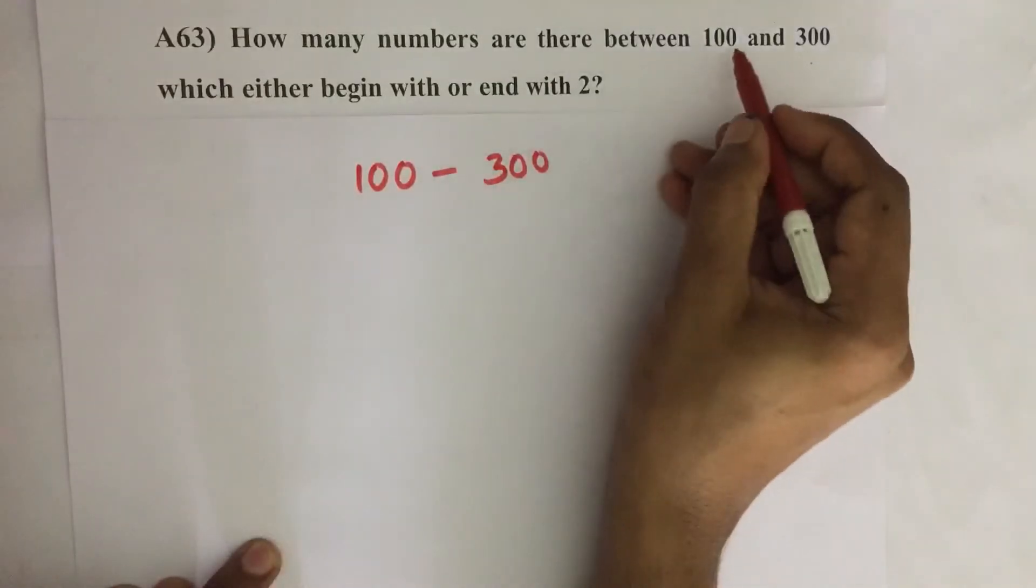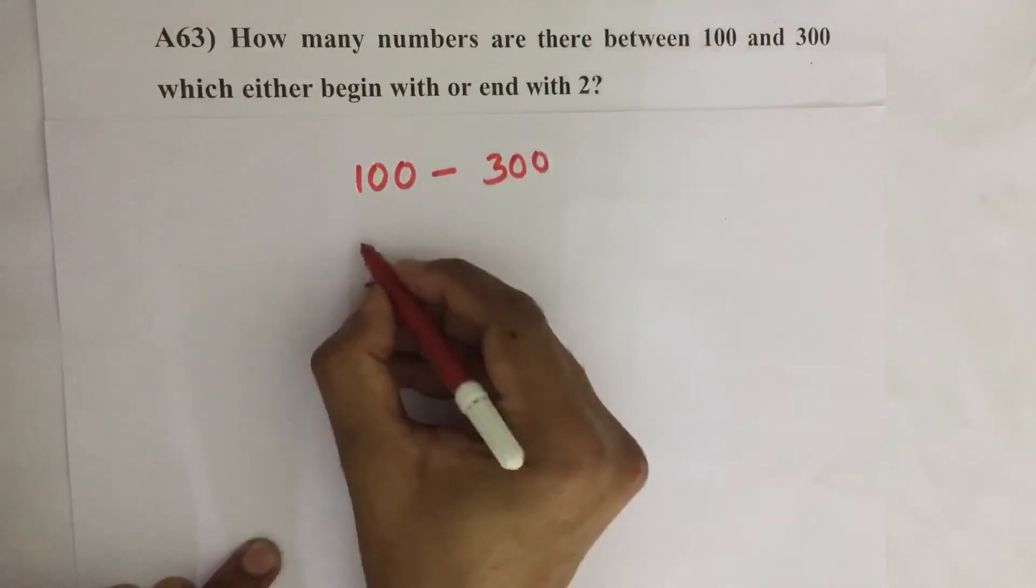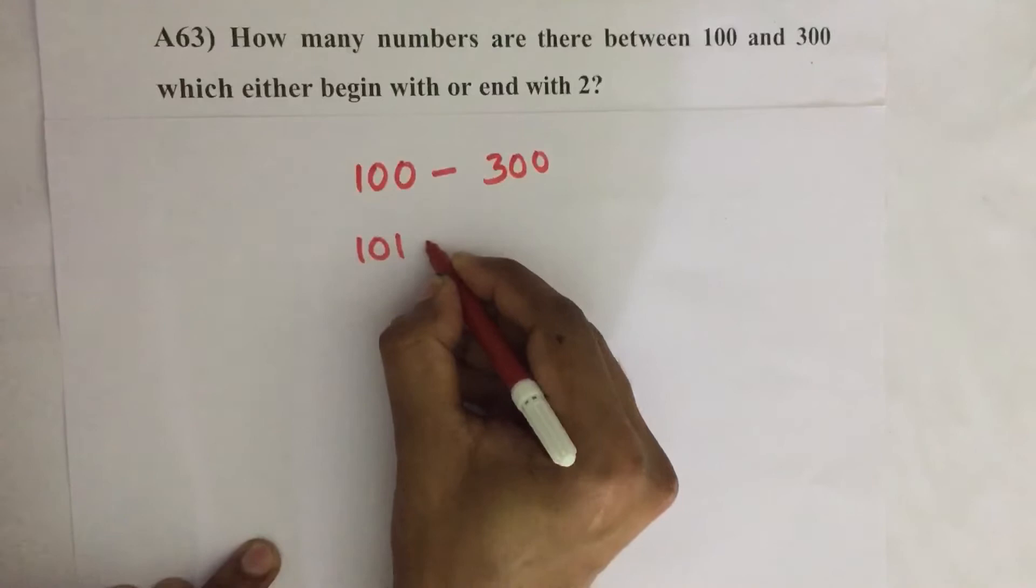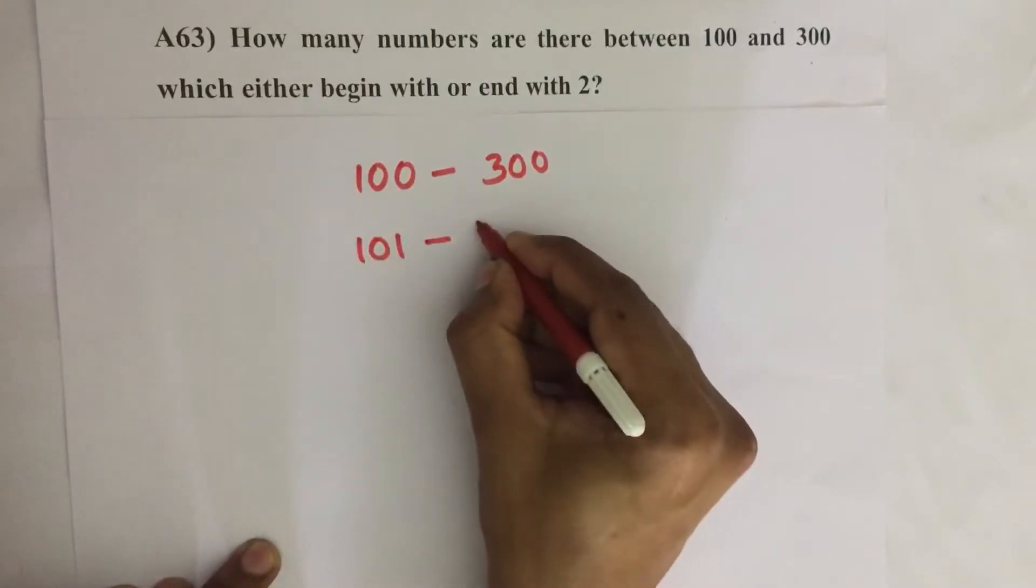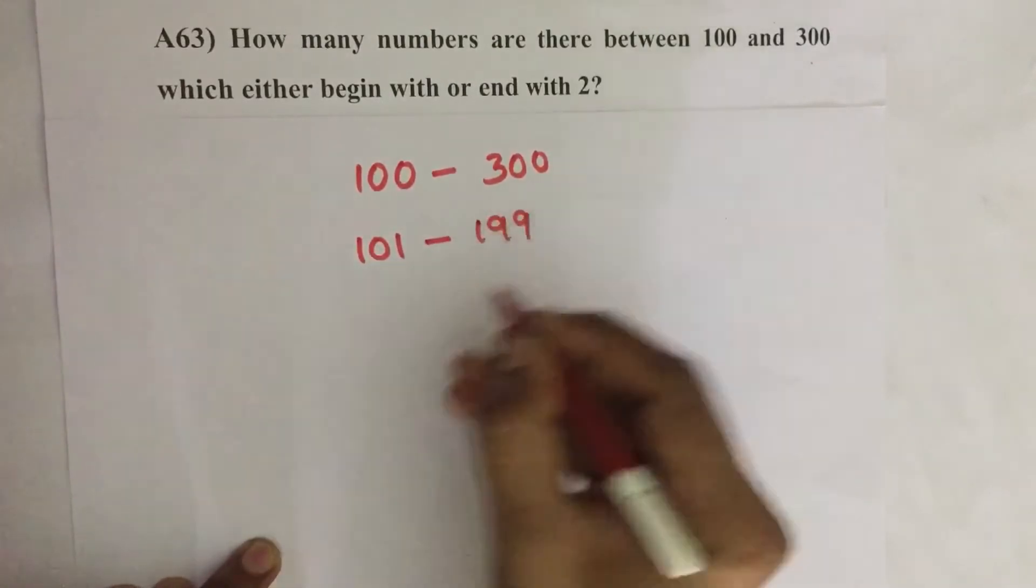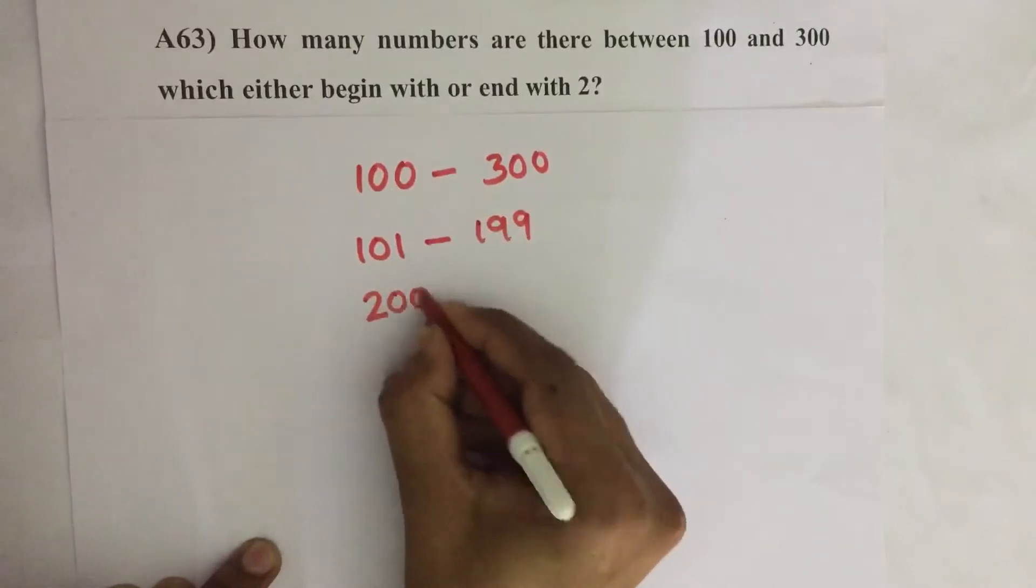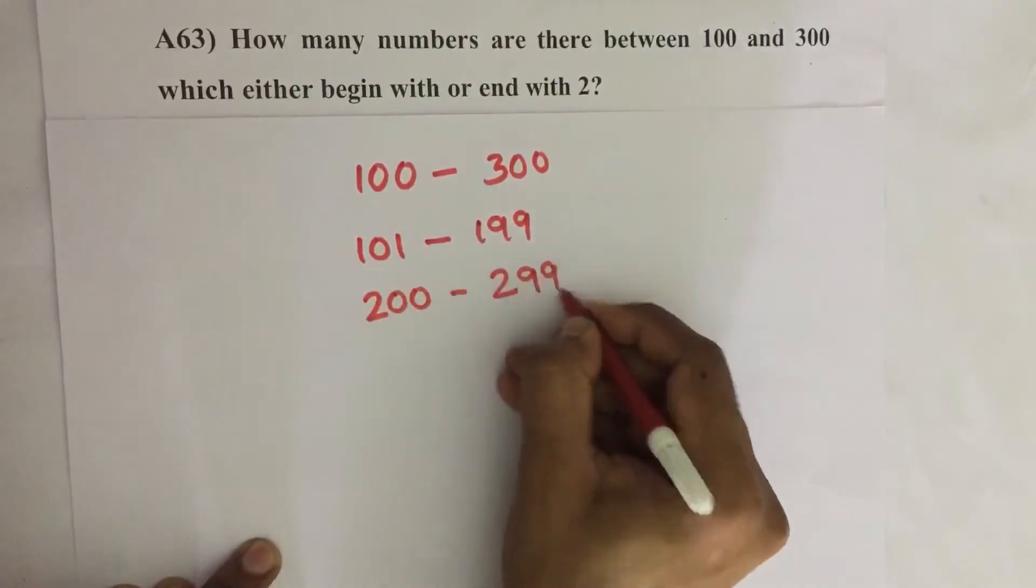So I am splitting this range into 2: 101 to 199, then 200 to 299.